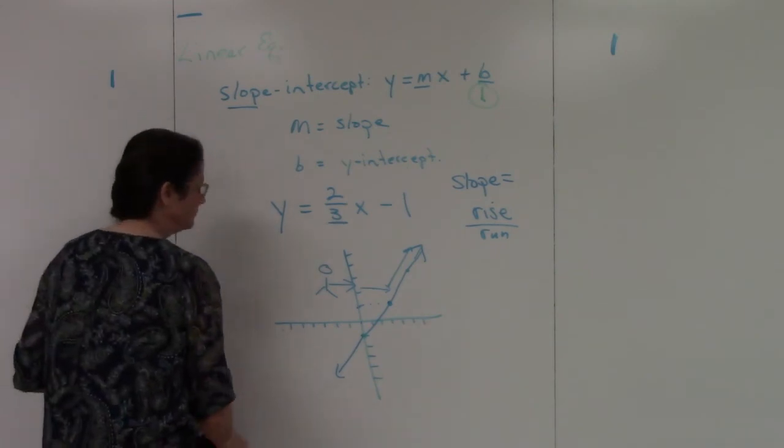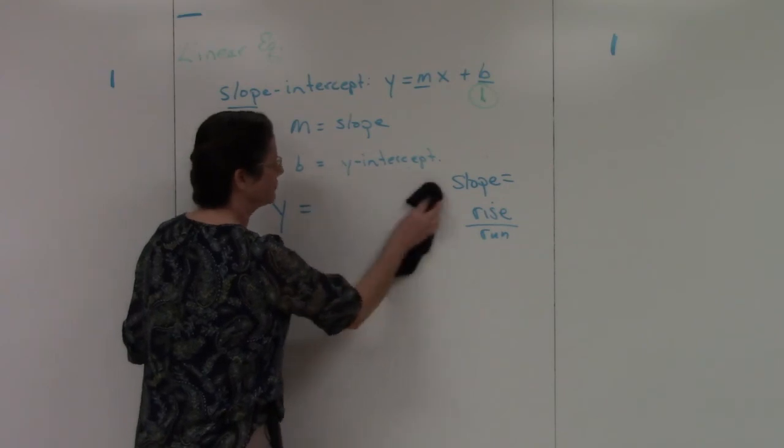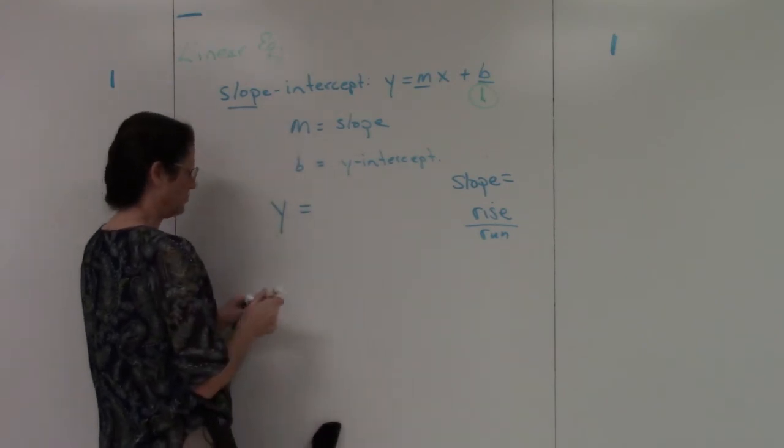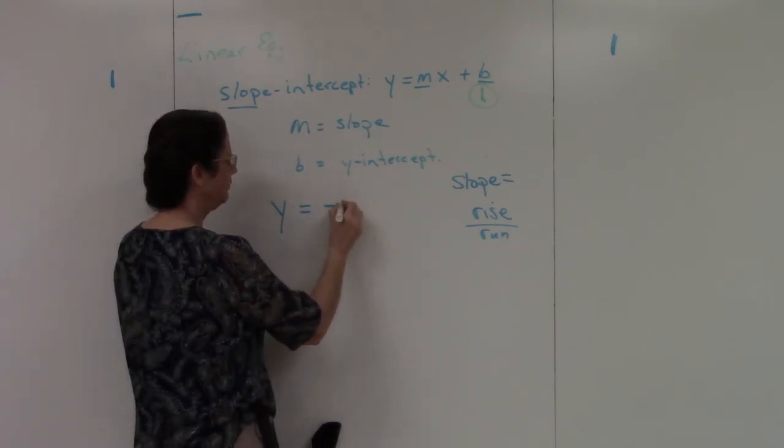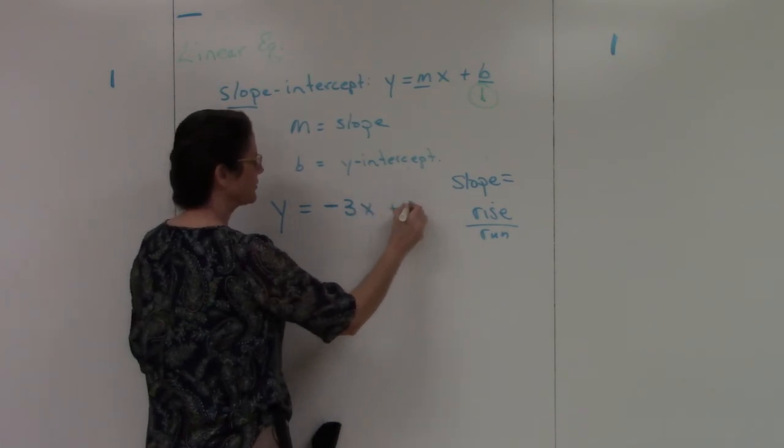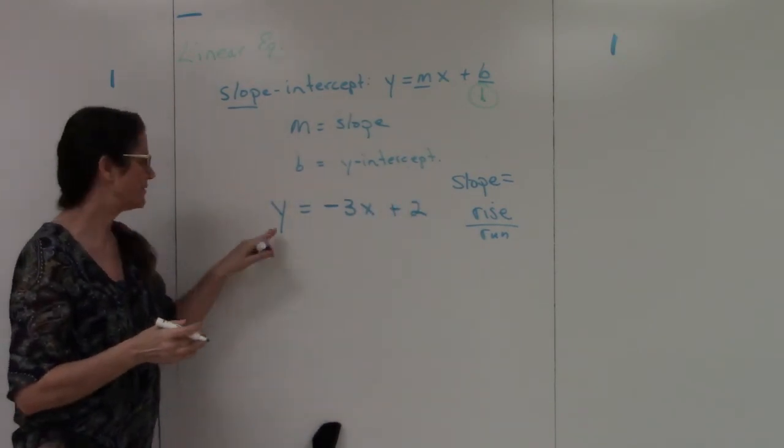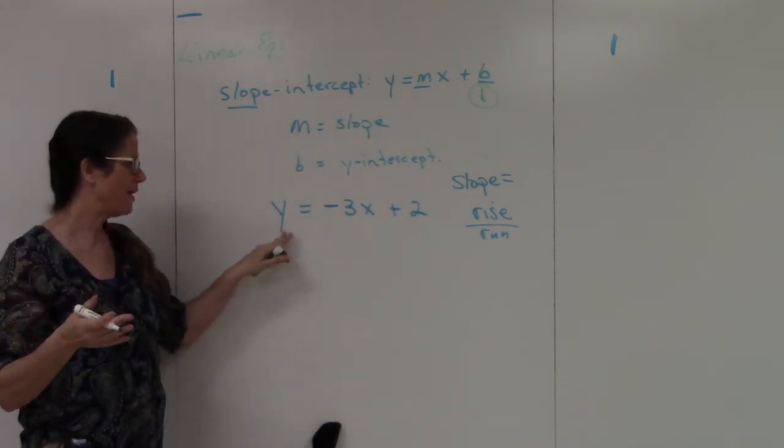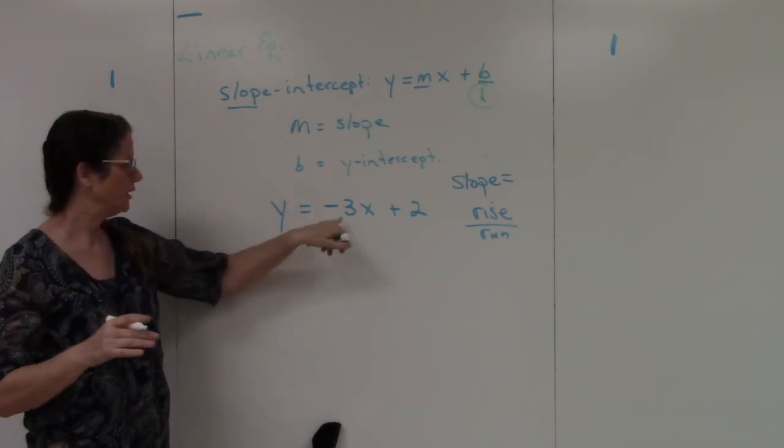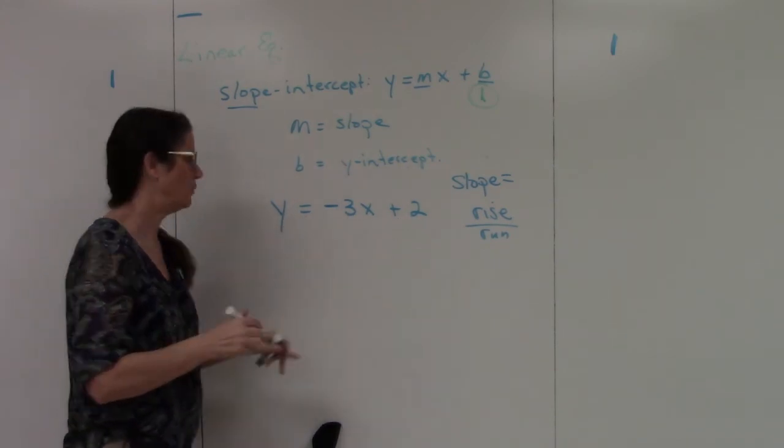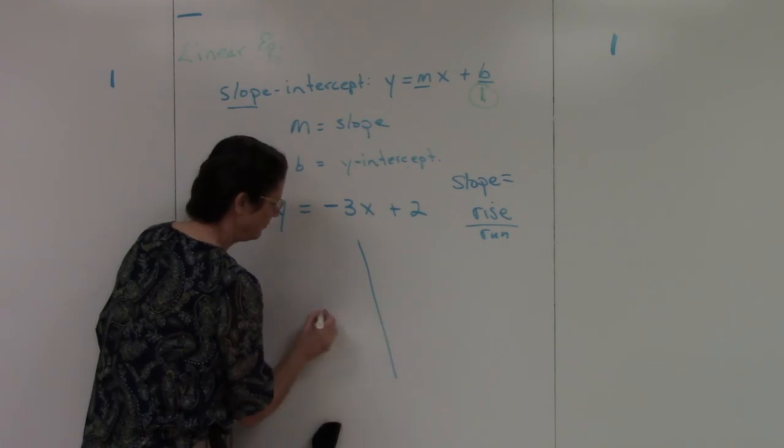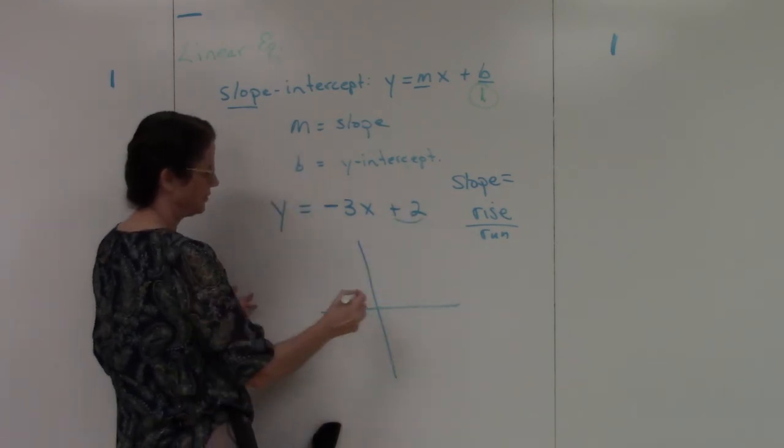Let's try another one. So now, let's make it a negative 3x plus 2. It's still in the slope-intercept format. Y equals. I'm good to go. There's my slope. There's my y-intercept. So I'm going to graph it. I'm going to start at plus 2.